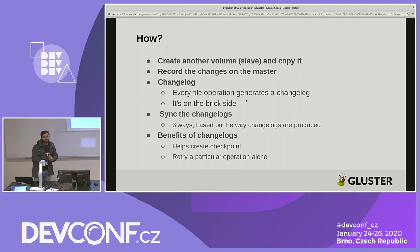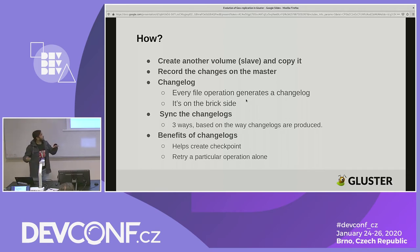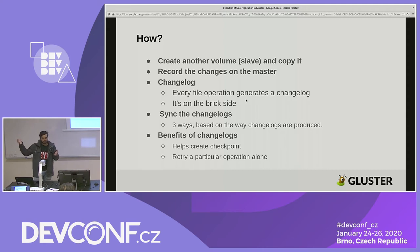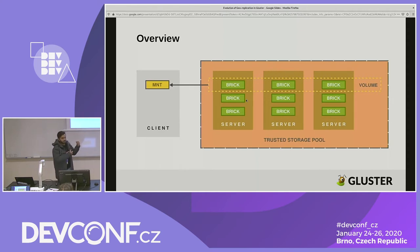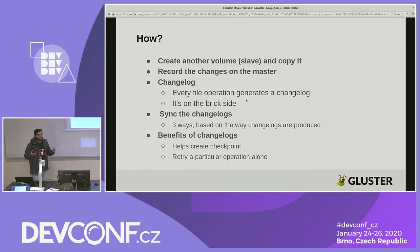How we achieve geo-replication with Gluster: you have a volume supposed to be copied from one data center to another. The first main volume is called the master volume, and this master volume is copied to a different data center called the slave volume. Every file operation that goes to the master volume gets recorded as change logs on the master, on the brick side. Based on how a change log is generated, there are three ways we replicate the volume from master to slave.